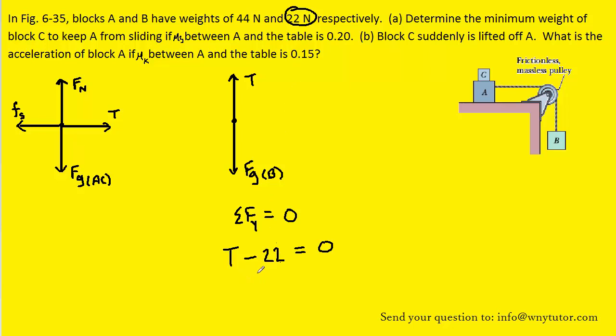It's pretty trivial to find the tension, which is also 22 Newtons. So once we have that tension, you want to circle it and keep it on the side. We're going to use it in just a moment when we apply Newton's second law to blocks A and C. Let's do that right now.